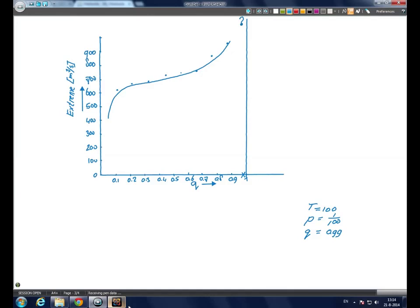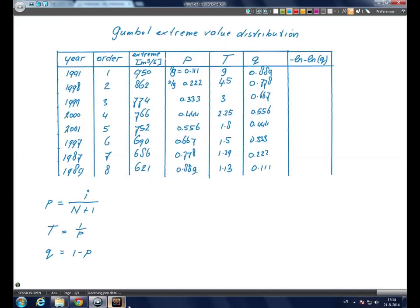Therefore, Gumbel introduced the reduced variant Y is minus LN minus LN Q.